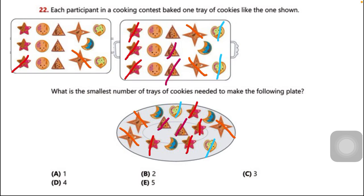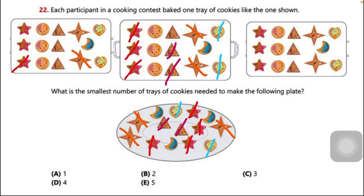What about the moons? There is only one moon on each tray. So if I cut one moon on the plate, I take it from the first tray, the second moon from the middle tray, and the third moon from the last tray. Now all the cookies on the plate are accounted for, meaning we actually need three trays to make the following plate.